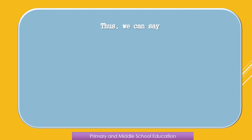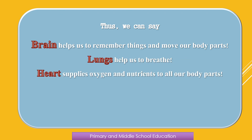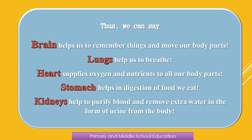Thus, we can say: brain helps us to remember things and move our body parts. Lungs help us to breathe. Heart supplies oxygen and nutrients to all our body parts. Stomach helps in digestion of the food that we eat. Kidneys help to purify blood and remove extra water in the form of urine from the body.